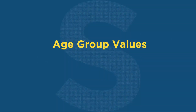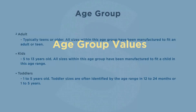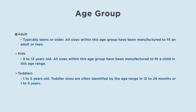Now we will see age group values supported by Google and our app. Adult — typically teens or older. All sizes within this age group have been manufactured to fit an adult or teen. Kids — 5 to 13 years old. All sizes within this age group have been manufactured to fit a child in this age range.